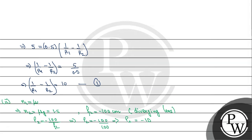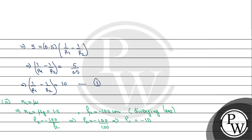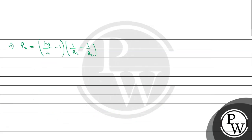Now applying the power formula for the second case: P2 = (μg/μ - 1)(1/R1 - 1/R2). We need to find μ. From equation (1), we know 1/R1 - 1/R2 = 10. Substituting P2 = -1, μg = 1.5, and using equation (1): -1 = (1.5/μ - 1) × 10.